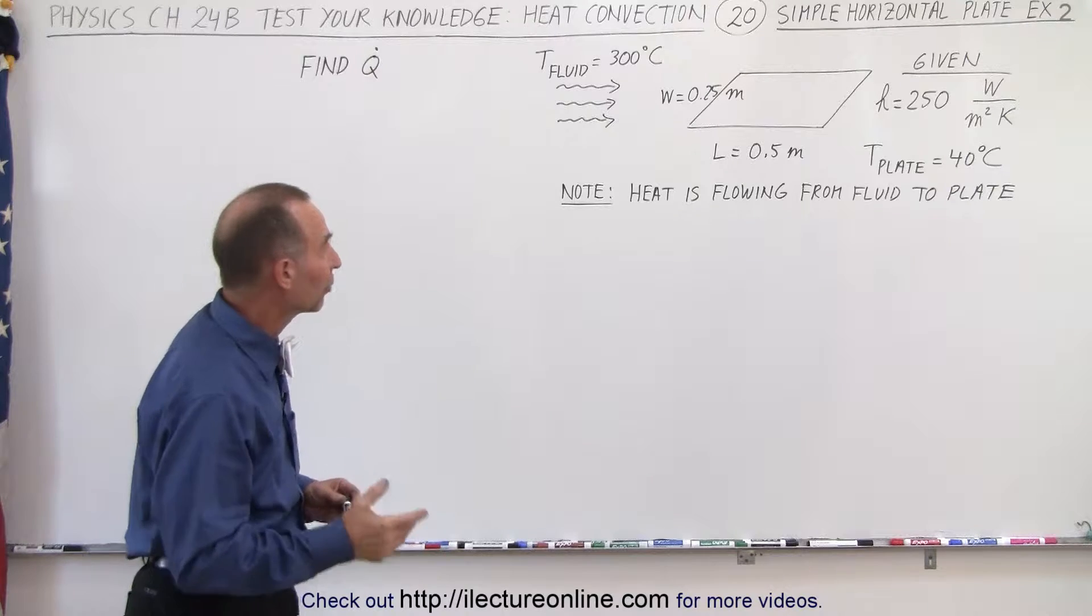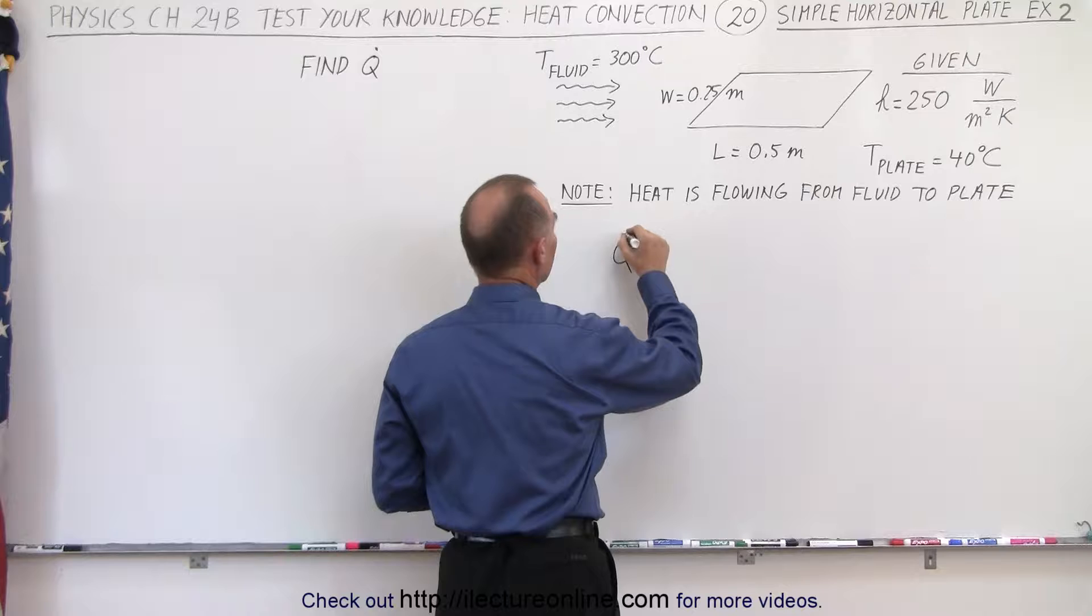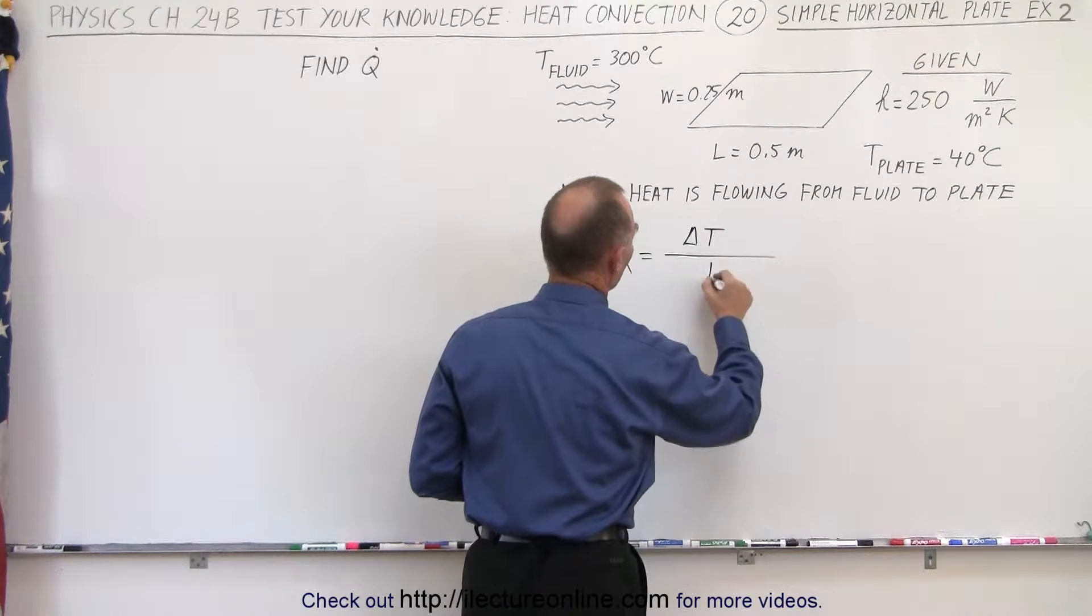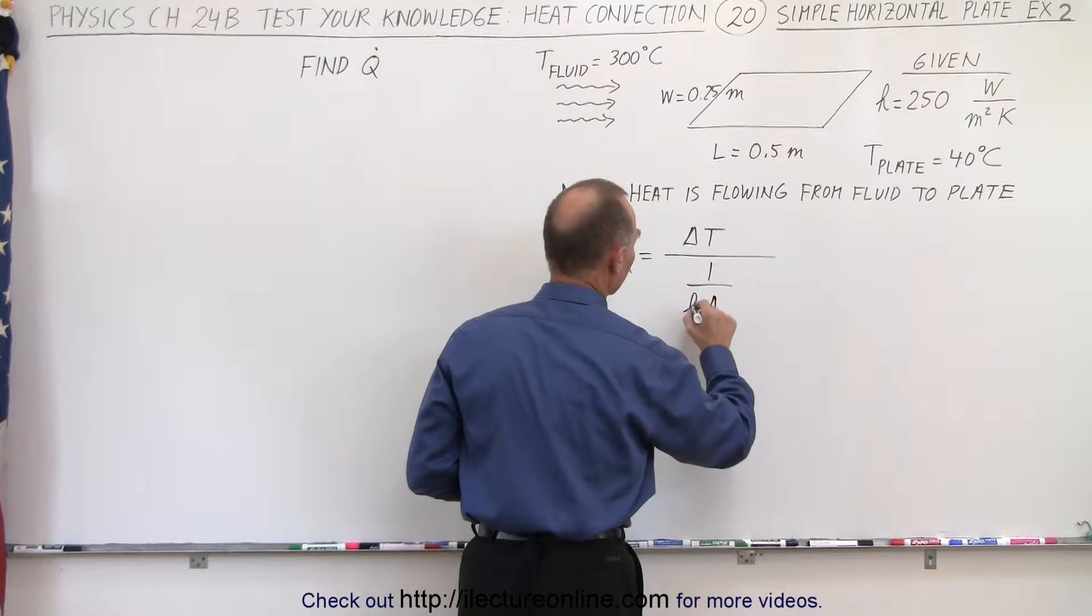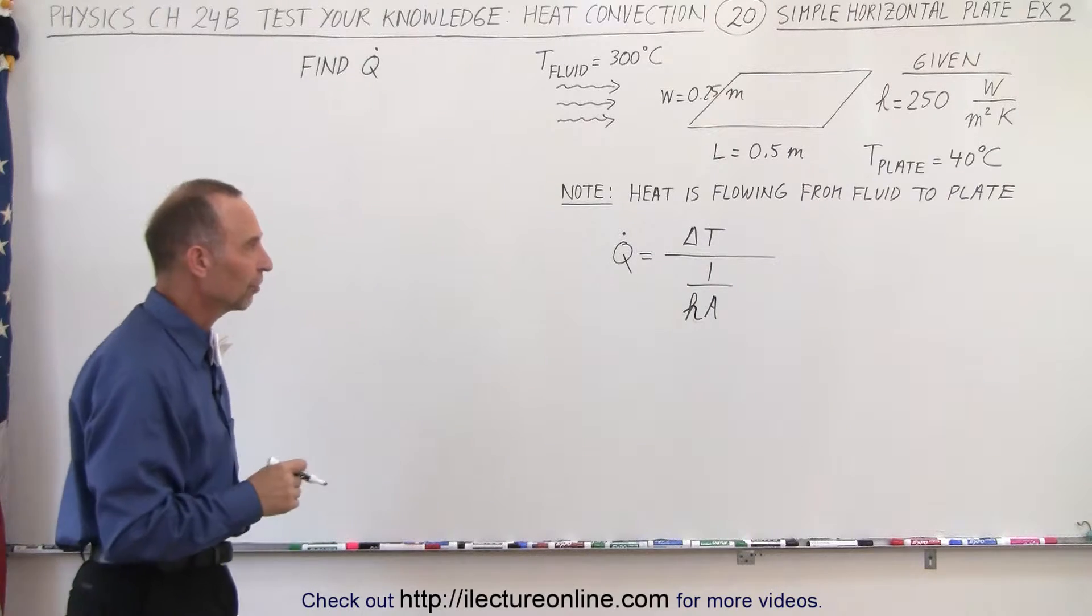We're given the dimensions of the plate, so let's go ahead and plug in our equation. So Q dot, the amount of heat flow, is going to be equal to the change in the temperature divided by 1 over H times the area. This should be an H, not a K. There we go. So the transmission coefficient and the surface area.